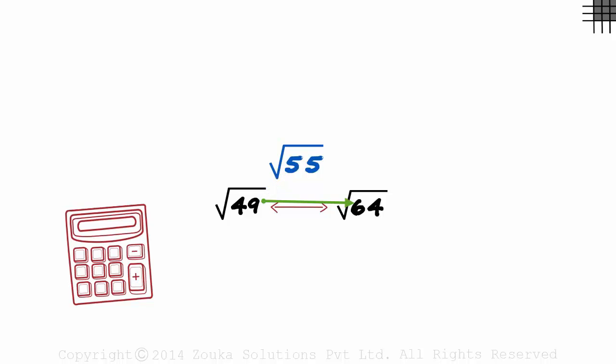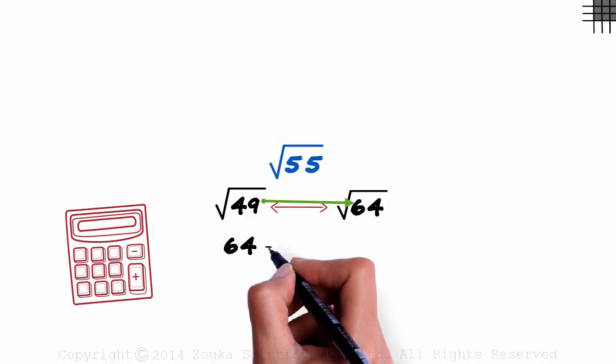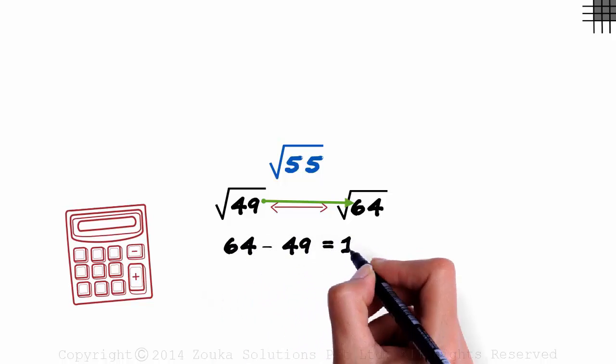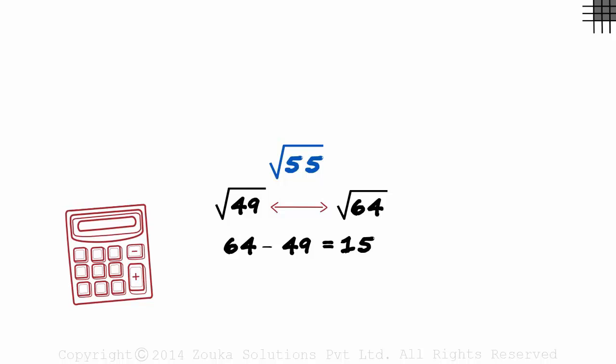To know how far 64 is from 49, we find the difference between 64 and 49. That equals 15. And to know how far 55 is from 49, we find the difference between 55 and 49. That is 6.